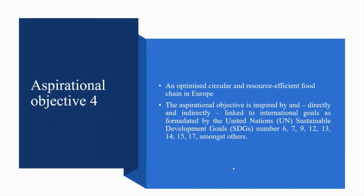Aspirational objective 4: An optimized circular and resource-efficient food chain in Europe. The aspirational objective is linked to UN SDGs: SDG 6 Clean Water and Sanitation, SDG 7 Affordable and Clean Energy, SDG 9 Industry Innovation and Infrastructure, SDG 12 Sustainable Production and Consumption, SDG 13 Climate Action, SDG 14 Marine Protection, SDG 15 Biodiversity, and SDG 17 Partnerships.